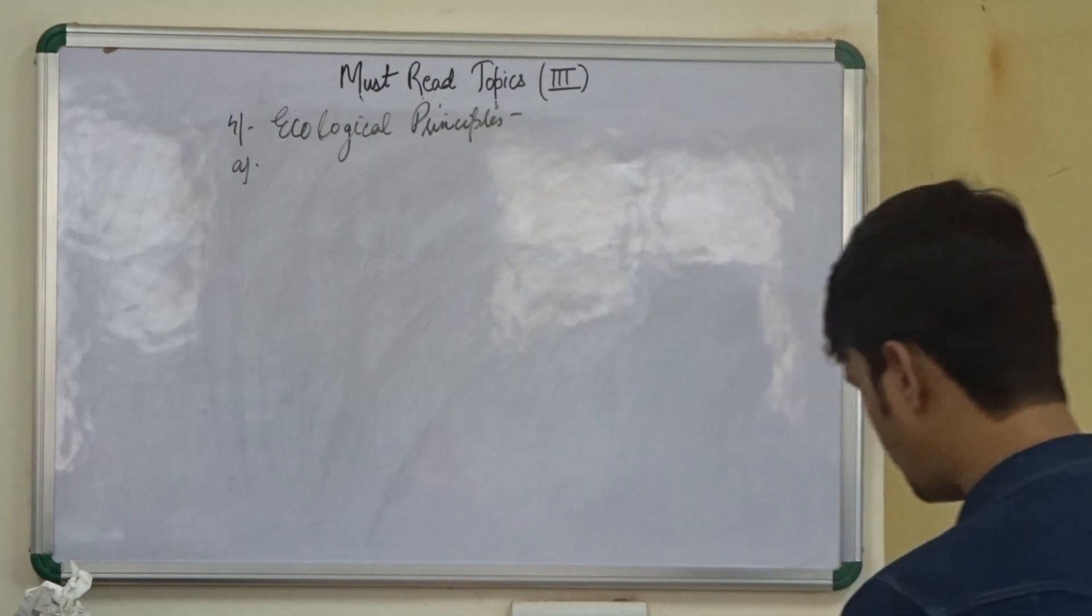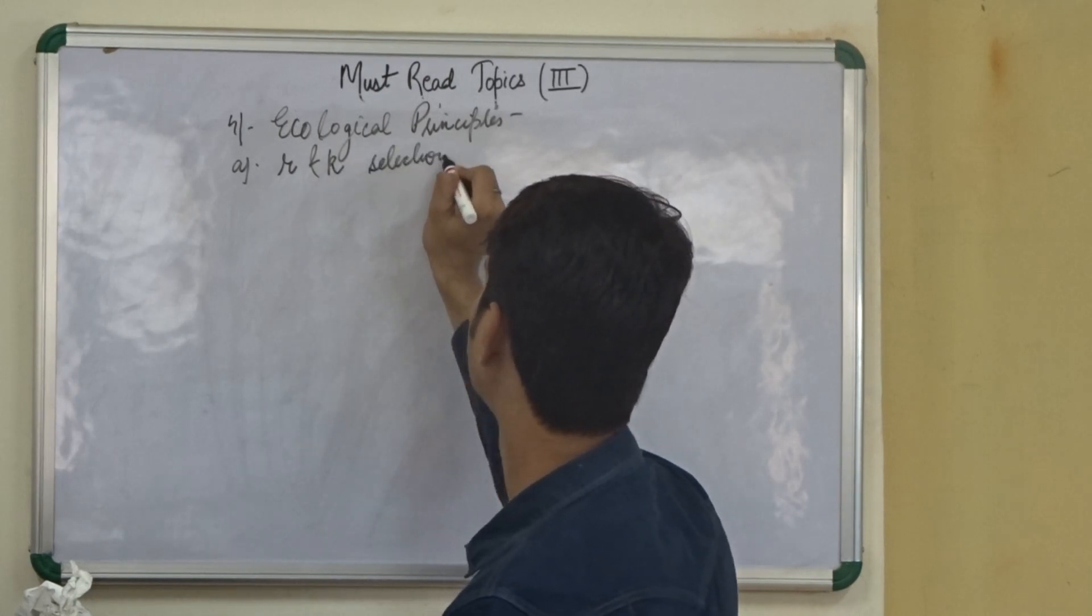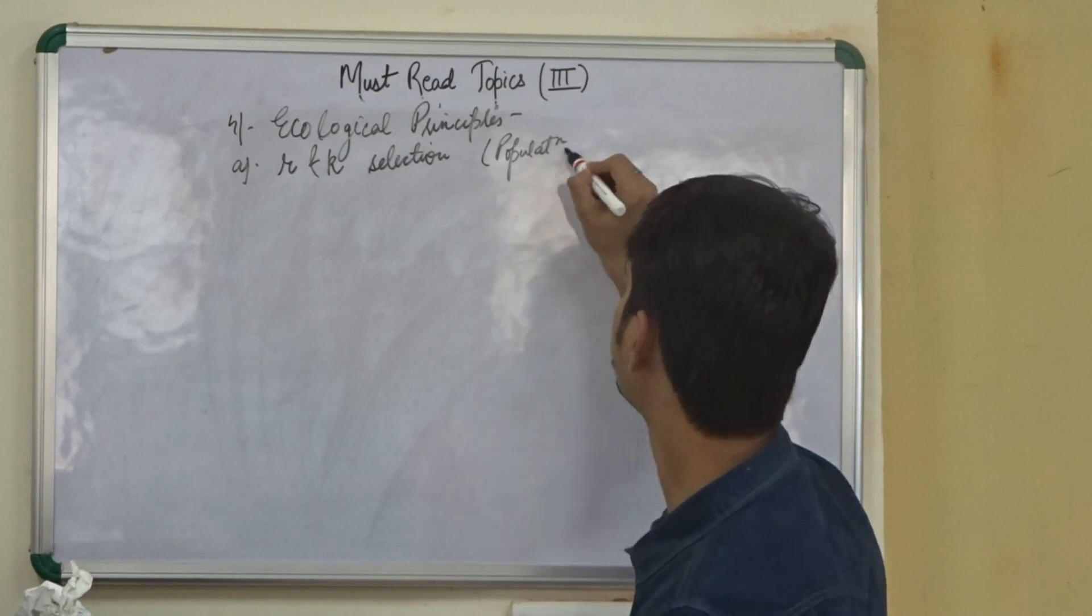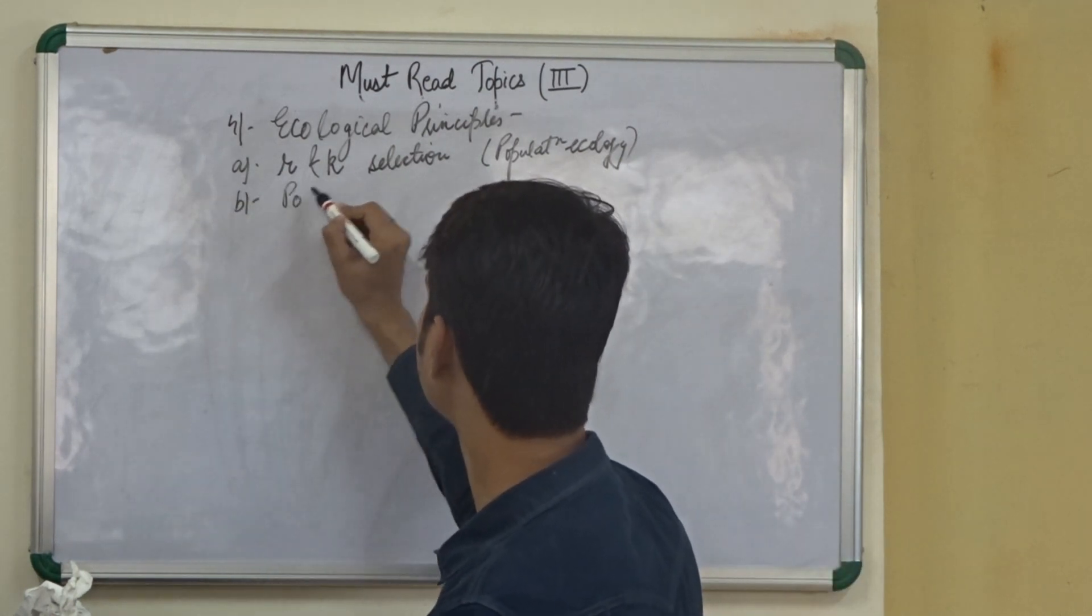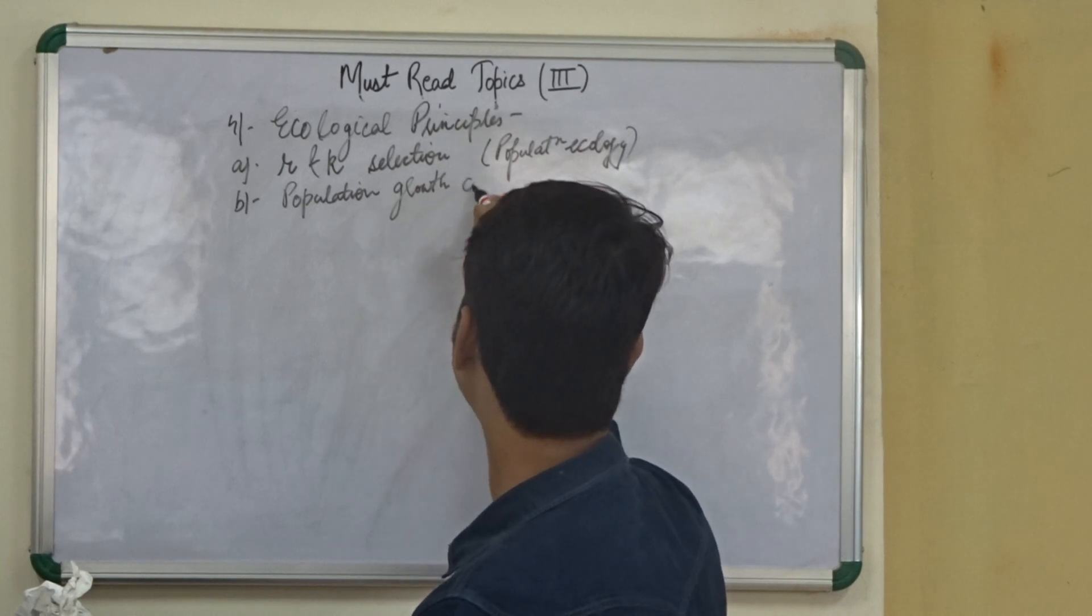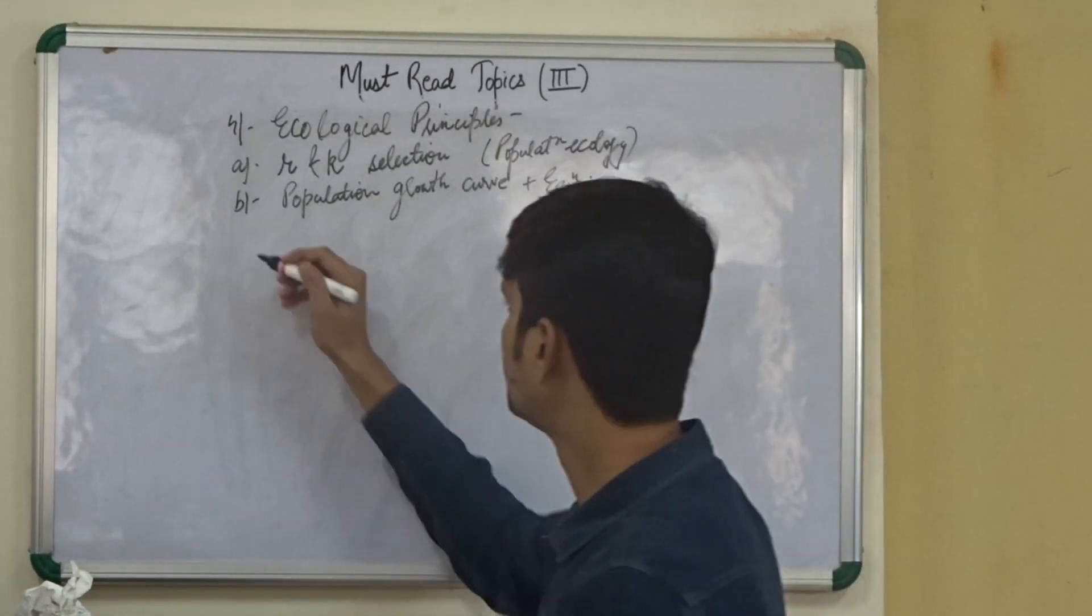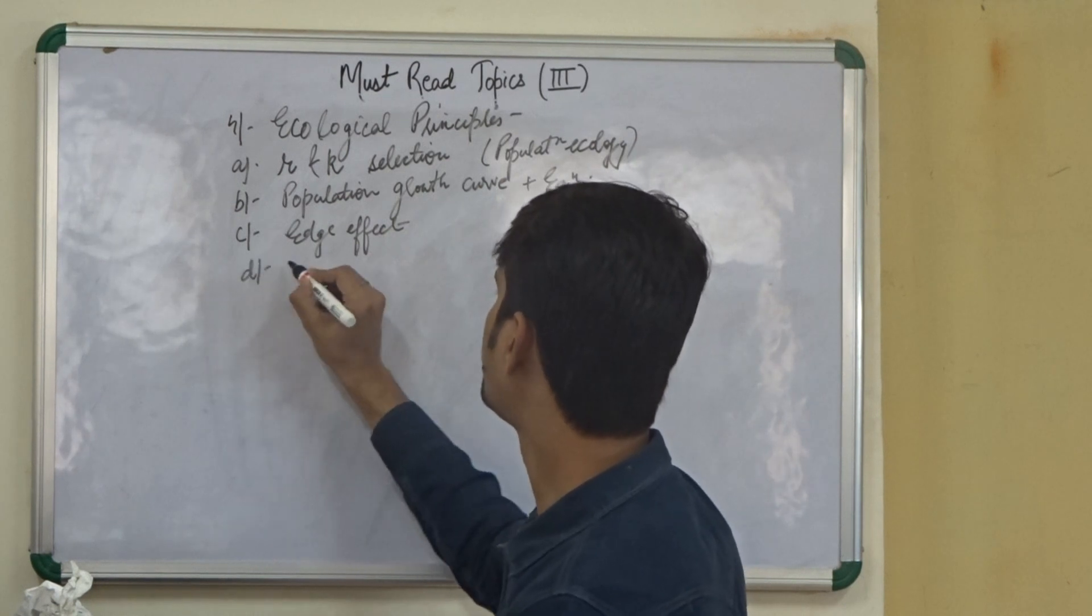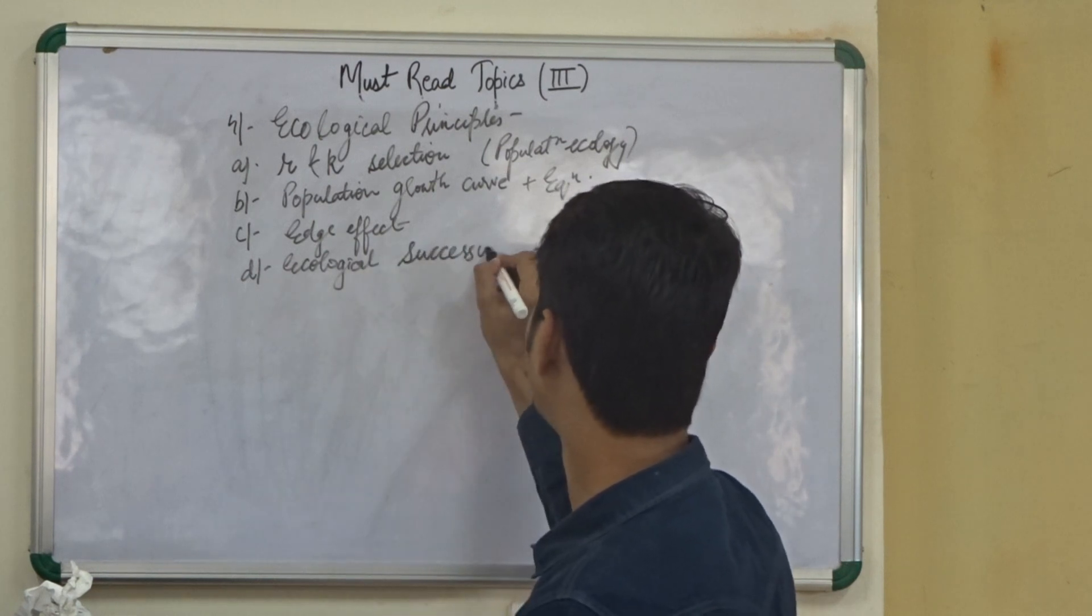So in ecological principles, we need to know about the R and K selection. This is part of population ecology actually. This is important. We also need to know about the population growth curve along with equations. Then we need to know about the edge effect. We need to know about ecological succession.